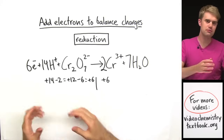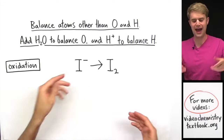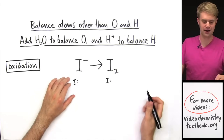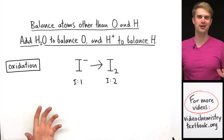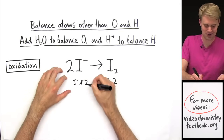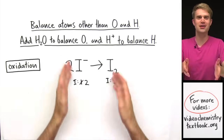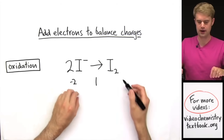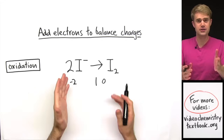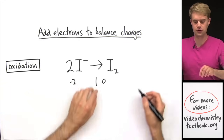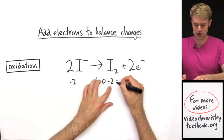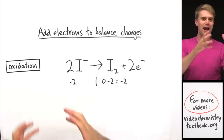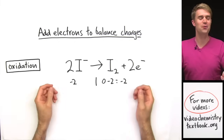Now I'm going to balance the atoms and charges for my oxidation half reaction. The only element we have to worry about here is iodine — we have one on this side and two here. So I'm going to put a 2 in front of the I-, and now we have two atoms on both sides. Now for charge: we've got two I- each with charge 1-, so minus 2 on this side and zero on the other side. In order to get these to balance I need to add two electrons to the right side: zero minus 2 equals minus 2. The charges balance. Now that the oxidation half reaction is balanced for atoms and charge, I'm ready to put it back together with the reduction half reaction.